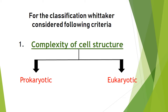For the classification, Whittaker considered the following criteria. Number one: complexity of cell structure. This gets divided into two types — prokaryotic and eukaryotic. Prokaryotic means they do not have a membrane-bound nucleus, or we can say a well-defined nucleus, or any other organelle. Eukaryotic means they have a nucleus.